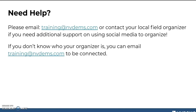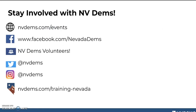Lastly, if you need help or have more questions, don't hesitate to reach out to us. You can reach us at training@nvdems.com or get in touch with your field organizer if you want additional support on using social media to organize. If you are new with us and don't know who your organizer is, you can always email training@nvdems.com to get connected. Thank you so much, Emma, for joining us for this training on social media, and thank you to all of you for watching. We hope you'll continue to stay involved with our organization. You can sign up to volunteer at nvdems.com/events. Please connect with us on Facebook, in our Facebook group, Twitter, and Instagram. For more trainings, please visit nvdems.com/training-nevada.